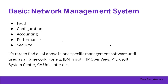Generally, if a system is to be categorized on capability, it can be on the following five bases: fault tolerance, configuration, accounting, performance, and security. It is rare to find all of the above in one specific software unless used as a framework — for example, IBM Tivoli, HP OpenView, Microsoft System Center, CA Unicenter, etc.